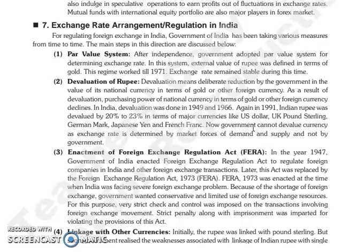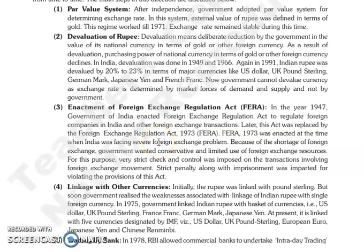To regulate foreign exchange in India, the Government of India has taken various measures from time to time. The main steps in this direction are discussed here. First is the par value system — after independence, the government adopted the par value system for determining the exchange rate. In this system, the external value was defined in terms of gold. This system worked till 1971, and during this period the exchange rate remained stable. Next is devaluation of the rupee — devaluation means the government deliberately reduces the value of its national currency in terms of gold and other foreign currencies, causing the purchasing power of the national currency to decline. Devaluation in India occurred in 1949 and 1966.